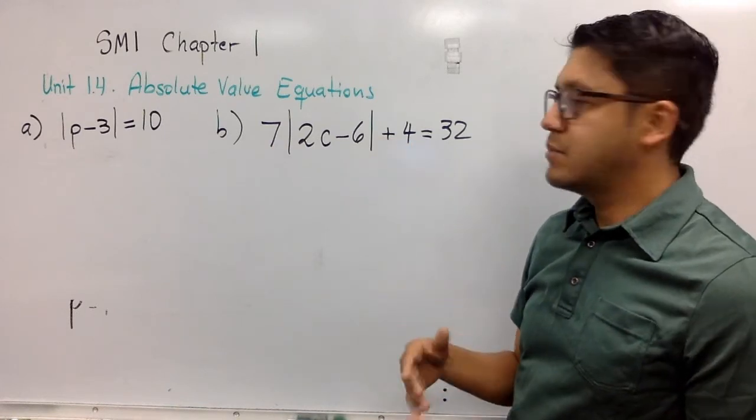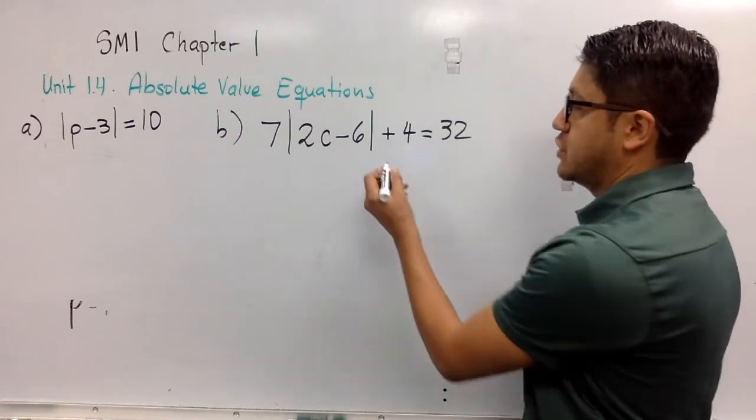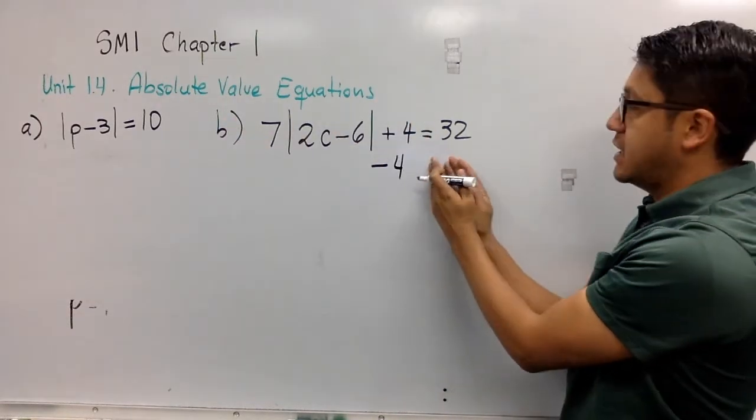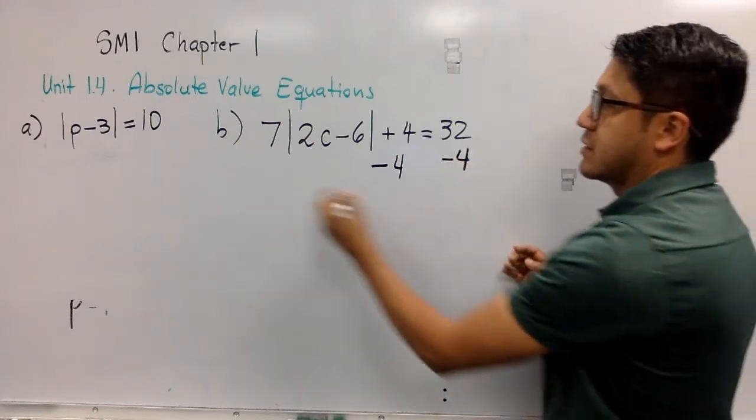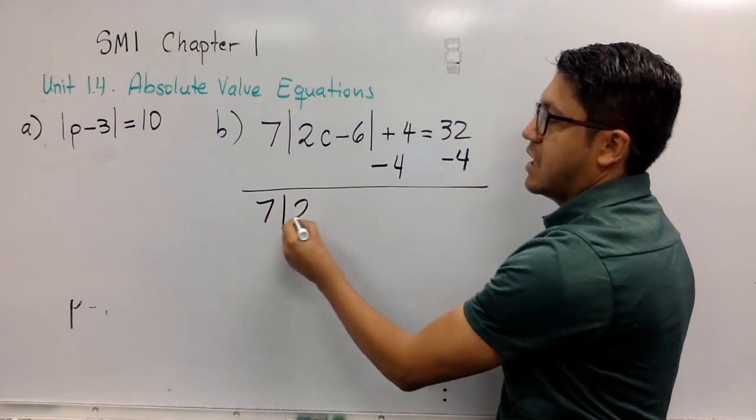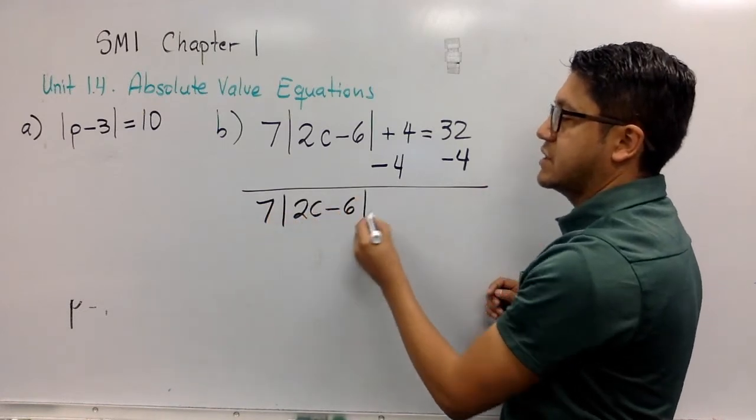We first subtract 4 on the left of the equal sign and on the right of the equal sign. I can rewrite: 7 absolute value of 2c minus 6, this is cancelled, and this equals 28.